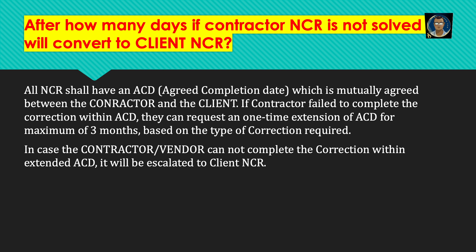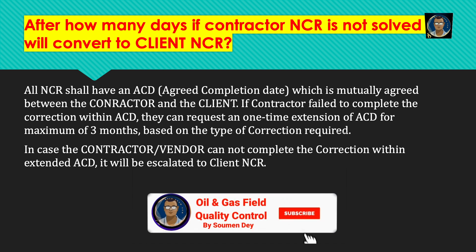After how many days will an unsolved contractor NCR convert to a client NCR? All NCRs shall have an ACD — agreed completion days — which is mutually agreed between the contractor and the client. If the contractor fails to complete the correction within the ACD, they can request a one-time extension of up to three months. If the contractor cannot complete the correction even within this extended ACD, it will be escalated to the client NCR — the next level of escalation.